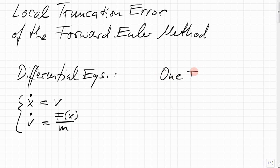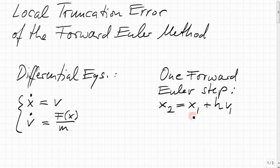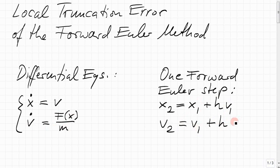We do one forward Euler step to advance the time by a step size h. The position after that step, x2, comes from the position before that step, x1. Of course these are not equal; there's some increment — the step size h times the velocity at the start. Similarly for the velocity: the velocity after that step is the velocity before that step, plus the step size times the rate of change of the velocity, which is the force f(x1) over the mass — taking the force at the start of that step.